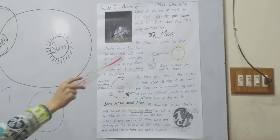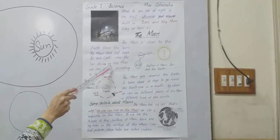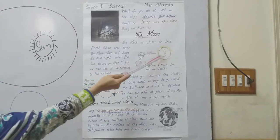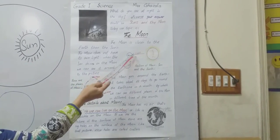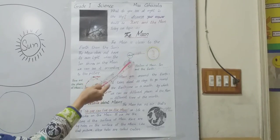When the sun shines on the moon, we can see it according to this picture. We can see the moon from the earth.